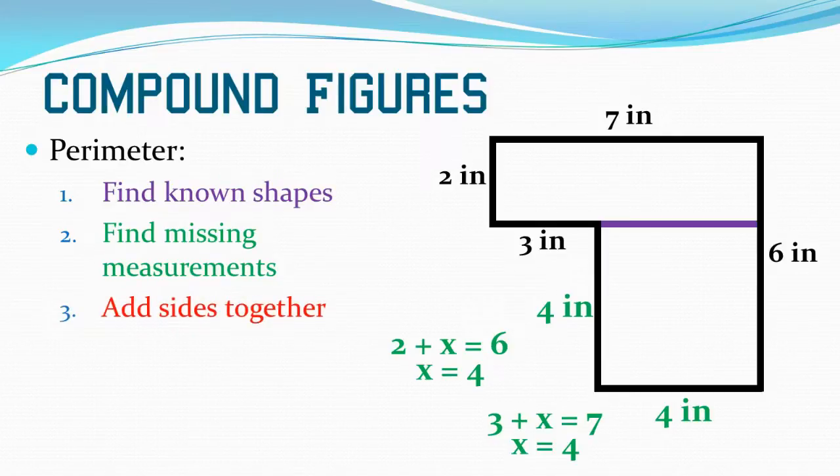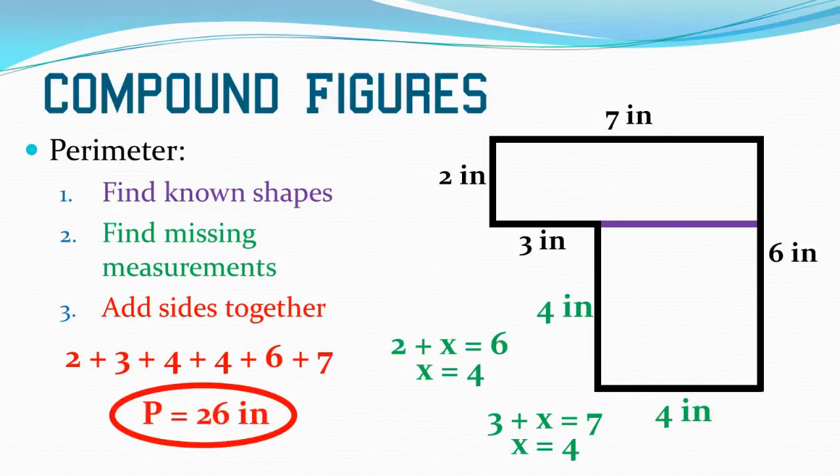Now I need to add all my sides together. I have two plus three plus four plus four plus six plus seven. If I walk all the way around that shape, that's the distance in inches that I traveled. I add them all up, I get 26 inches.